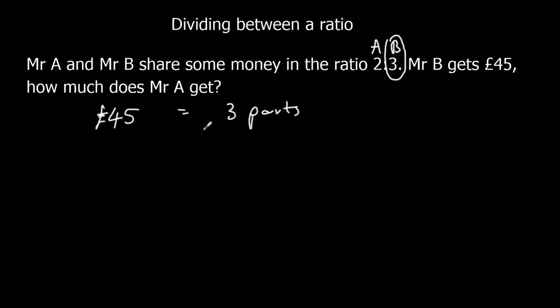So 45 pounds is 3 parts. So to find out what 1 part is, we need to divide by 3. So 1 part is 45 divided by 3, 15. So each part's worth 15. So this is 3 fifteens. 3 times 15 and 2 times 15.